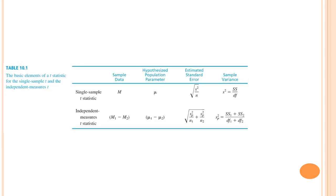For a one-sample t-test, the formula is the sample mean minus the population mean divided by the estimated standard error. For the independent measures t-test, the numerator is your sample mean from sample one minus your sample mean from sample two, divided by your estimated standard error. The population means for sample one and sample two are in the formula, but since we don't know them, they are always zero.